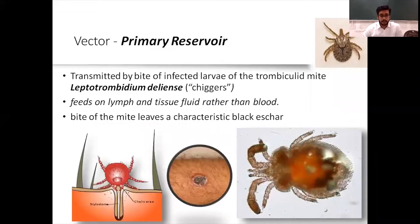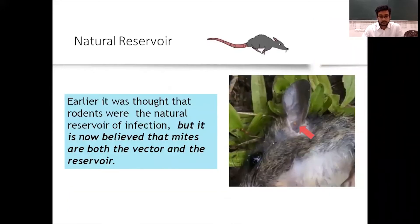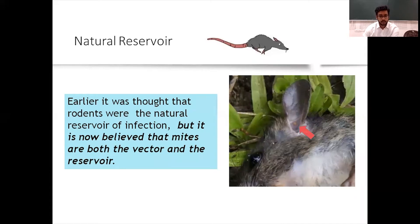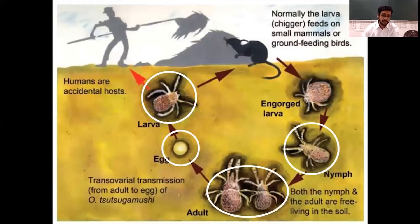The primary reservoir: scrub typhus is transmitted by the bite of infected larvae of the trombiculid mite — the chigger. They feed on lymph and tissue fluid rather than blood. This bite of the mite leaves a characteristic black eschar, which I'll show in the following slides — these are classical signs for scrub typhus fever. Rodents were originally thought to be the natural reservoir, but it is now believed that mites are both the vector and the reservoir.